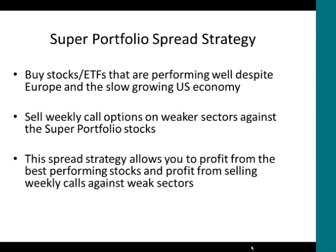We want to buy stocks and ETFs that are performing well despite Europe and the slow-growing U.S. economy, and then sell weekly call options on weaker sectors against these — what I call super portfolio stocks. This spread strategy allows you to profit from the best-performing stocks and at the same time profit from selling weekly calls against weak sectors. I'll show you an example of that with TJX.